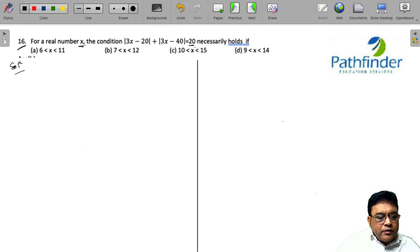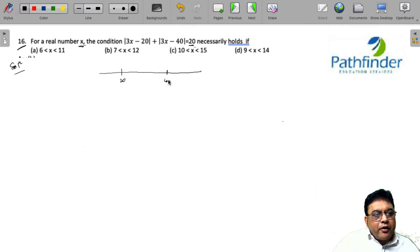Let us understand what this question has provided with us. So, if you draw a number line, there are two critical points for 3x: 20 and 40. And there are three possibilities.